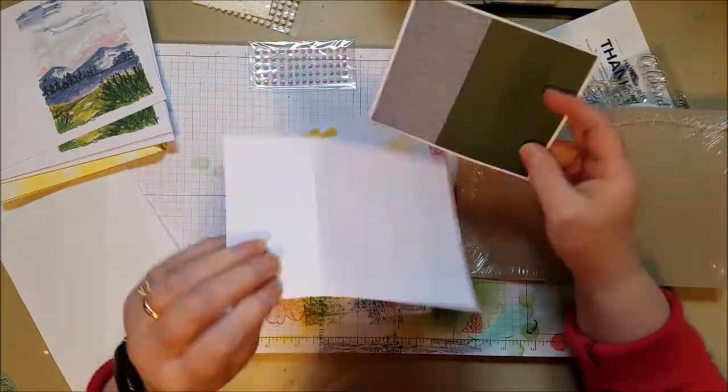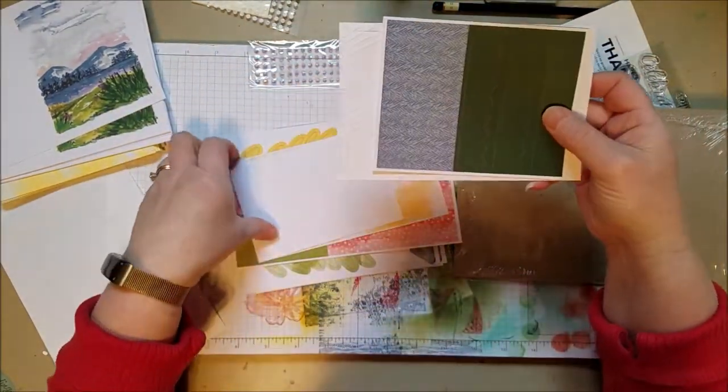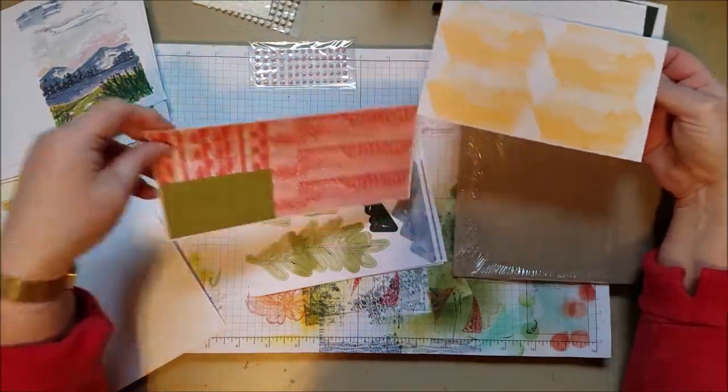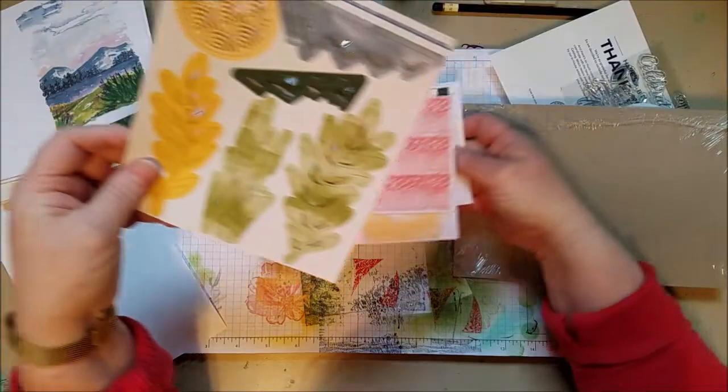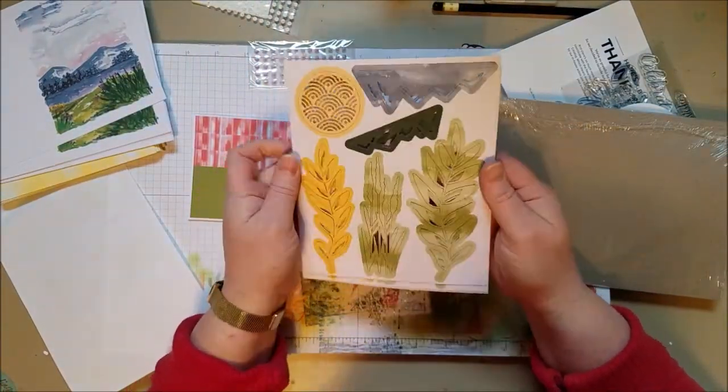Alright, these are gonna go on our cards. Some texture pieces, some colorful pieces. This is gonna be our sentiment pieces. And then look at these die cuts here. We've got some mountains, some plants, several sheets of each.